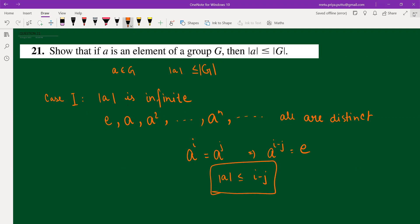And from here, you can conclude one thing, which is order of A is finite, but we have considered it to be infinite. So these all are distinct and this all belongs to G because of the closure property. So order of G will also be infinite. And we are done here.